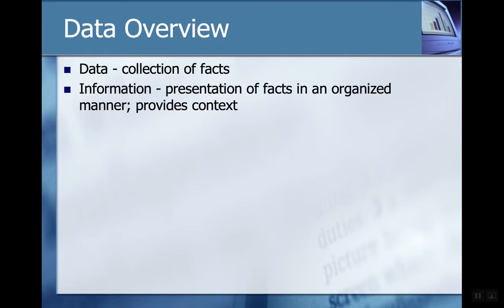Imagine an unformed ocean of data. When you convert that to information, what you're doing is providing context, definitions, and structure. From a computer perspective, we've been doing this data-to-information transformation for a long time — computers do this very well.